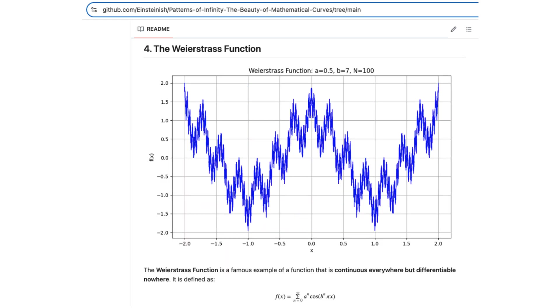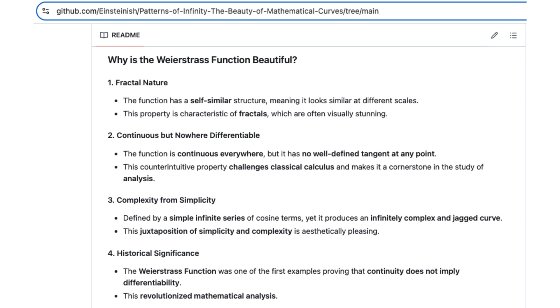At first glance, the Weierstrass function seems like a chaotic jagged wave, but it holds a mathematical paradox. It is continuous everywhere, yet differentiable nowhere.